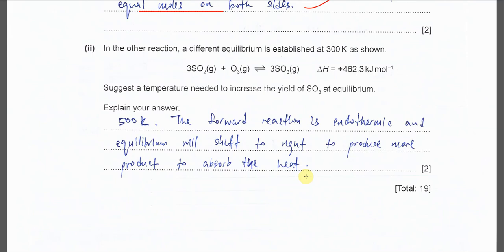Part 2: In the other reaction, a different equilibrium is established at 300 Kelvin as shown in this equation: SO2 plus O3 forms SO3. Delta H is positive 462.3. Suggest a temperature needed to increase the yield of SO3. Very easy because we know that this is endothermic, so forward reaction is going to absorb the heat. Means we have to increase the temperature, let the equilibrium shift to right to absorb the heat.